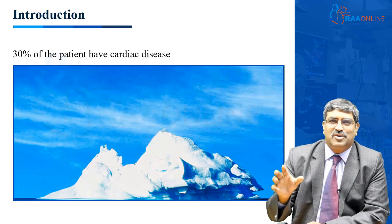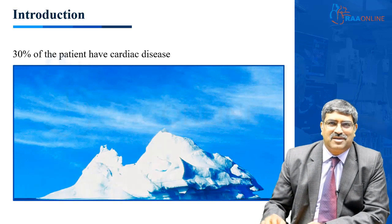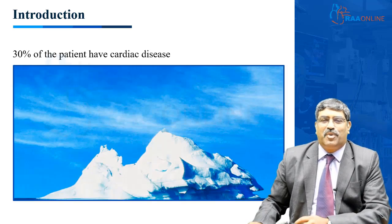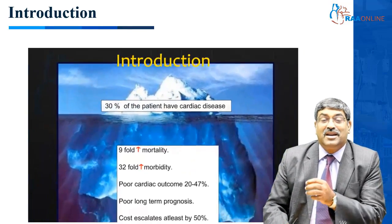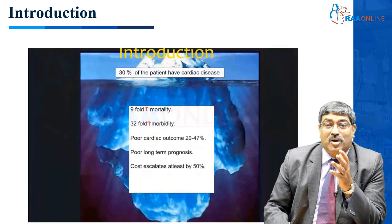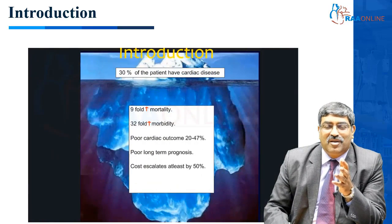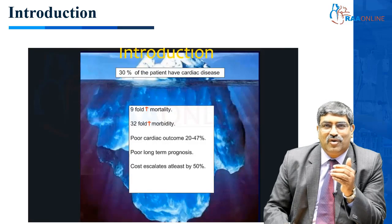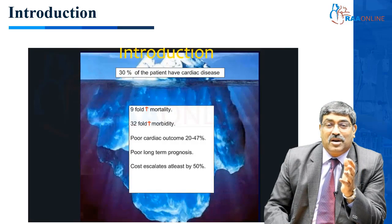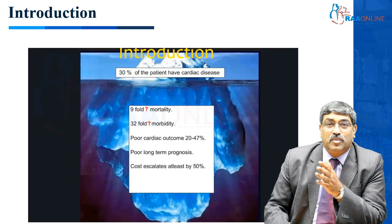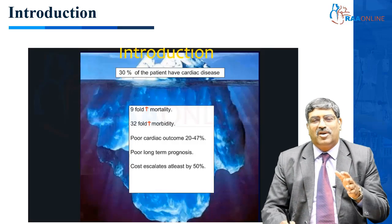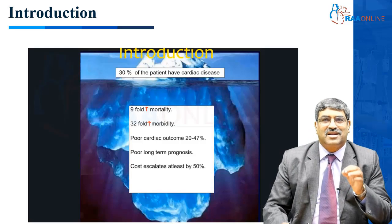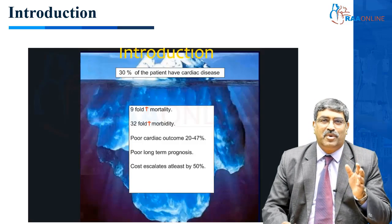Almost 30 percent of patients who come for non-cardiac surgery have some form of illness associated with the cardiovascular system. That is like the tip of the iceberg — what is submerged is very important. It increases mortality by around nine-fold and morbidity by around 32-fold, and cardiac outcome is poorer by almost 40 percent.